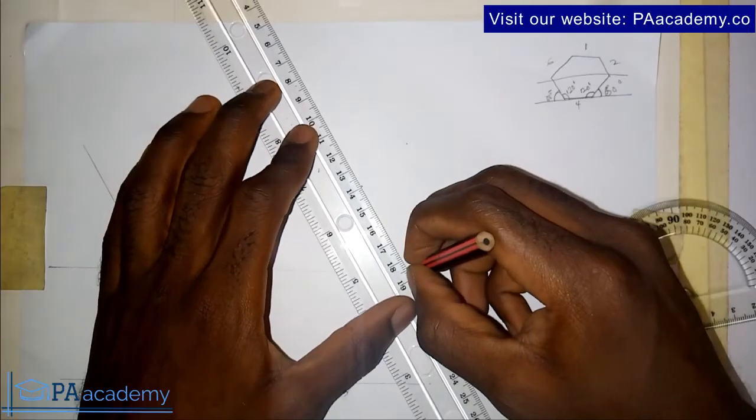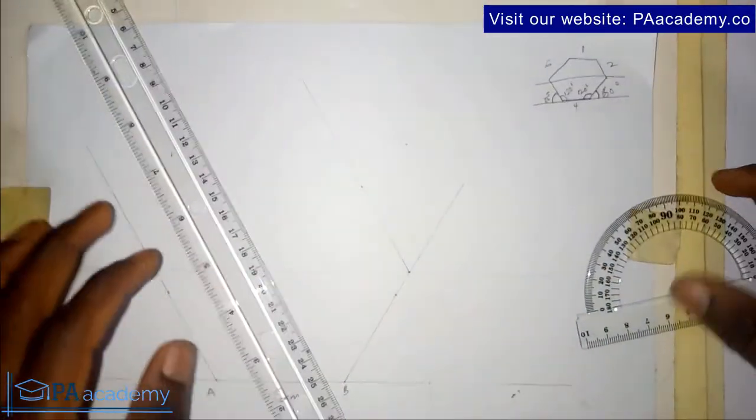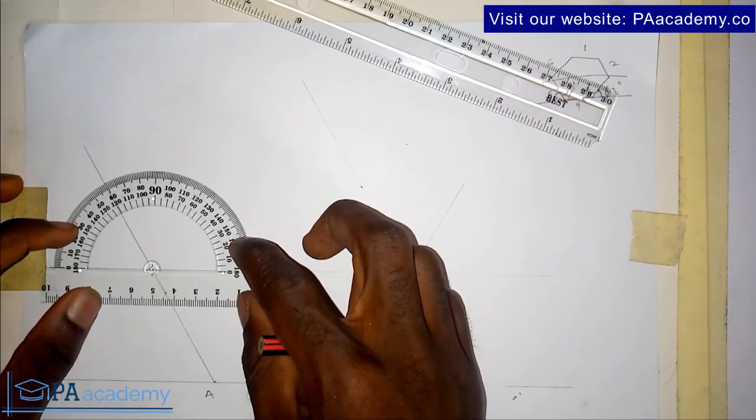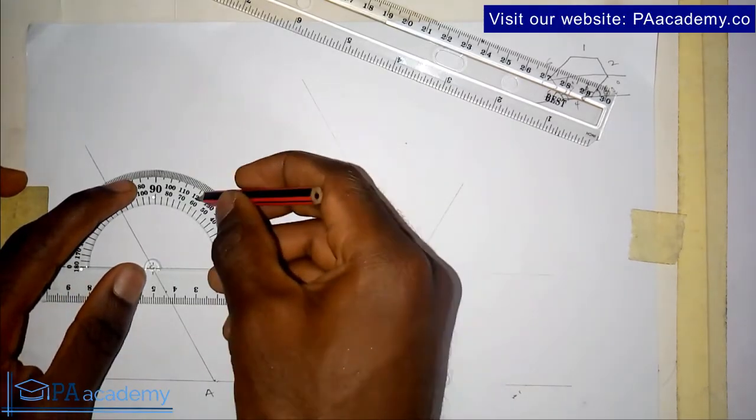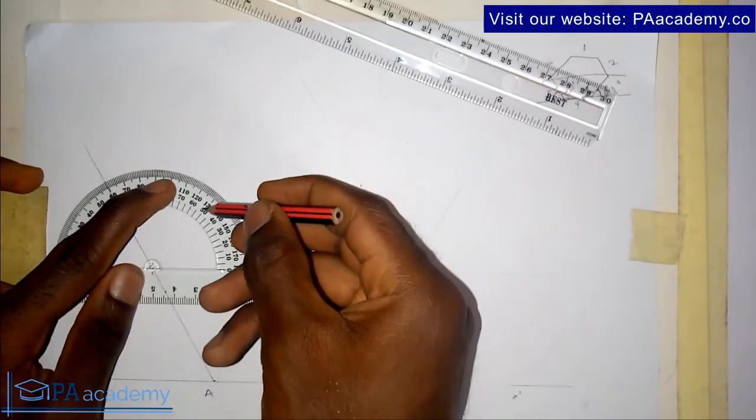I'll join the lines. At this point also, I'll measure 60 degrees in this direction. This is 0, 10, 20, 30, 40, 50, 60.